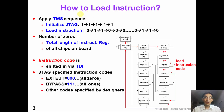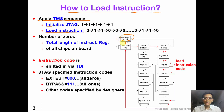Before we can execute an instruction, we need to load the instruction code into the instruction register. We can load the instruction code by applying the following TMS sequence. First, we initialize the JTAG by applying a sequence of five ones. By doing so, we will initialize the TAP controller to the test logic reset state. Starting from the test logic reset state, we can then load the instruction by applying a sequence of zero, one, one.